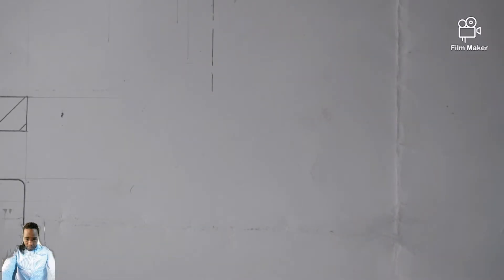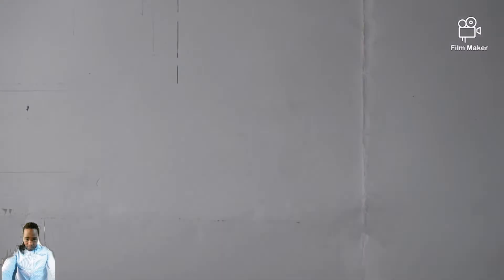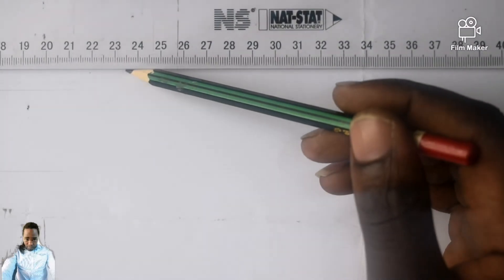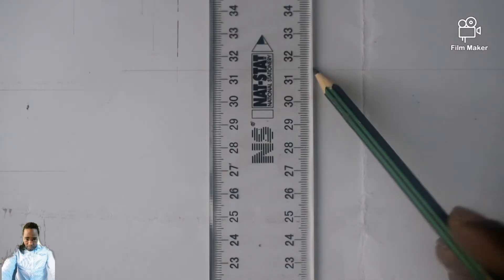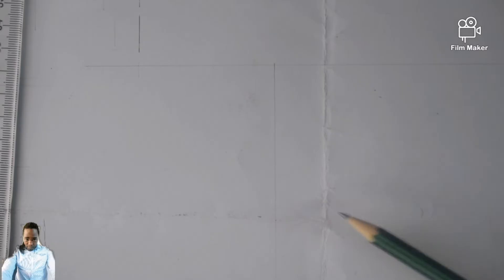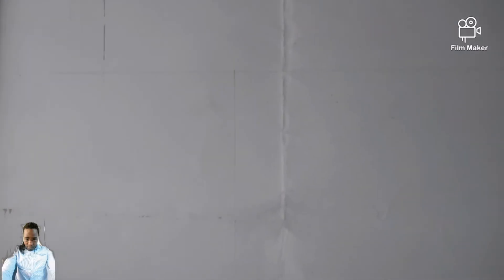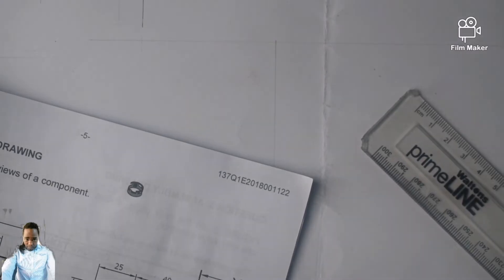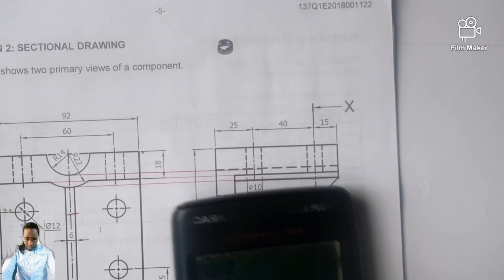Before you start, you must plan your work very well. Since they said to draw even a top view, you cannot start your front view too low, because the top view is supposed to be underneath the front view. I'll start by drawing a faint line on this side and another one on the other side. The scale is 1:1, so the dimension from here to here is 92 millimeters — 92 divided by 2 gives us 46.